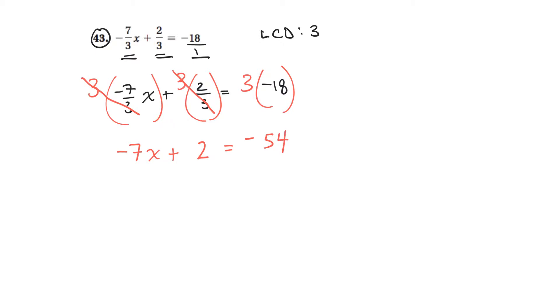So now I've got a nice equation that doesn't have any fractions. So I'm going to move the 2 to the other side. So I'll subtract 2 here and subtract 2 there. So I'll get negative 7x is equal to negative 56.